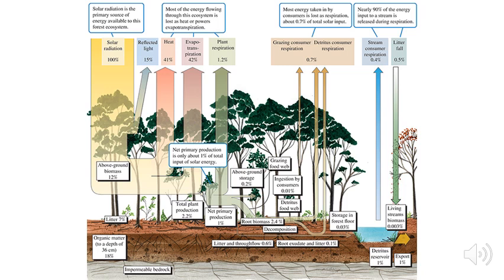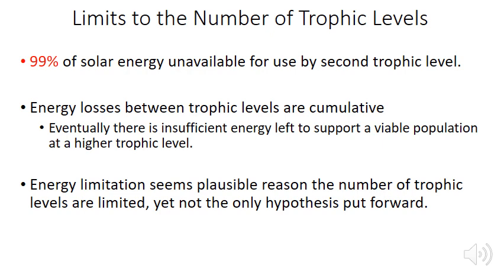Gosz also looked at the energy content of different animal groups within this system and found that large vertebrates were essentially absent proportionally in terms of the energy they represented. Since 99% of solar energy is unavailable to the second trophic level, energy losses between trophic levels are cumulative, and eventually there is insufficient energy to support a viable population at a higher trophic level. This energy limitation hypothesis is a plausible reason why we only tend to see 3 or 4 trophic levels per ecosystem.